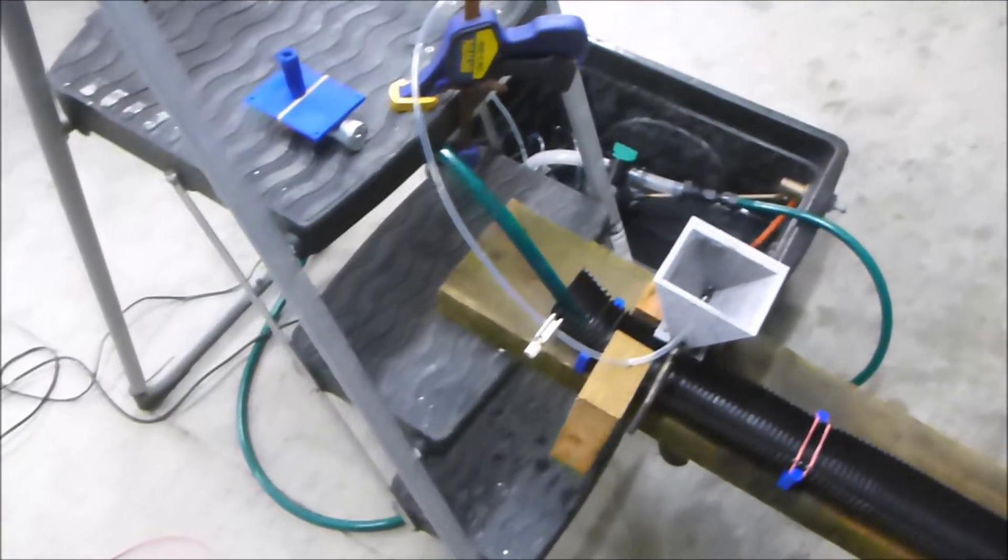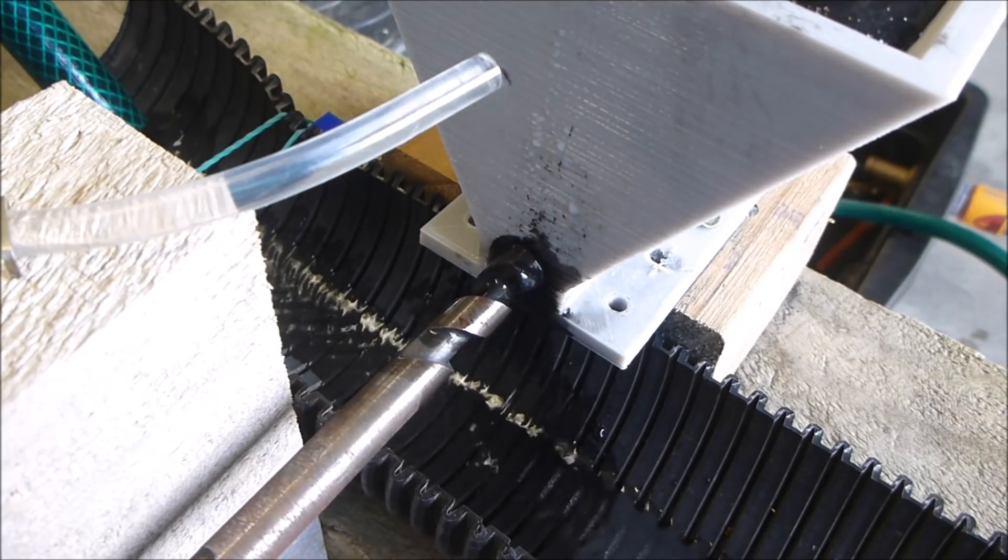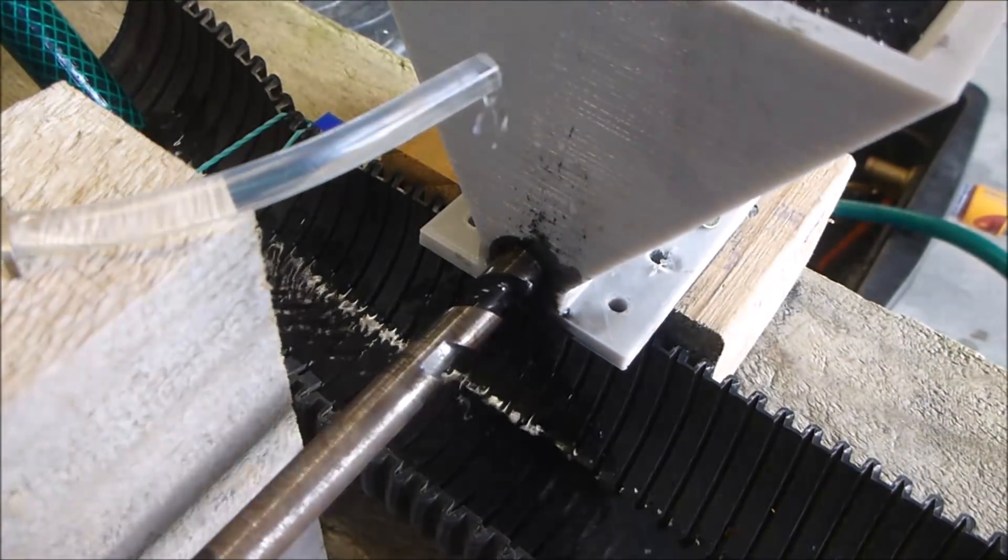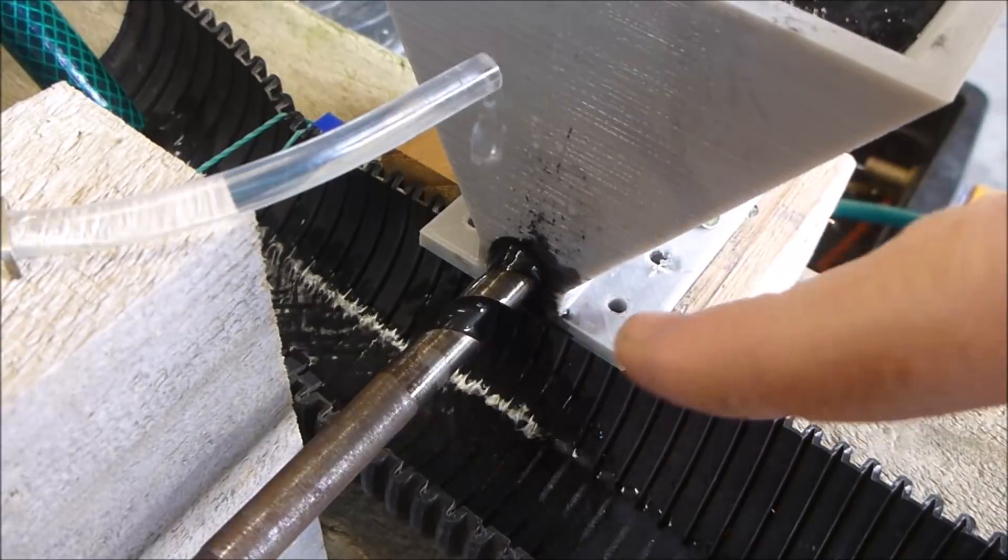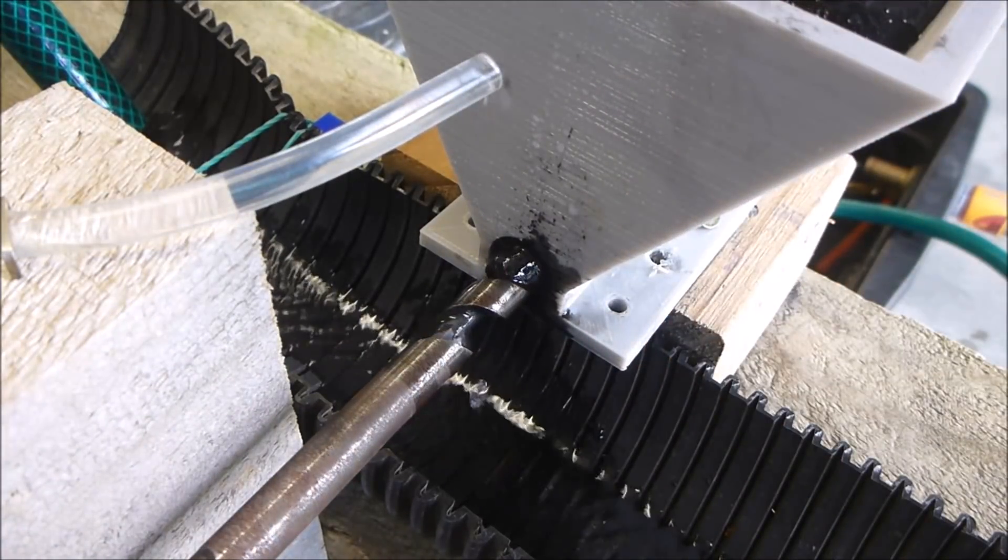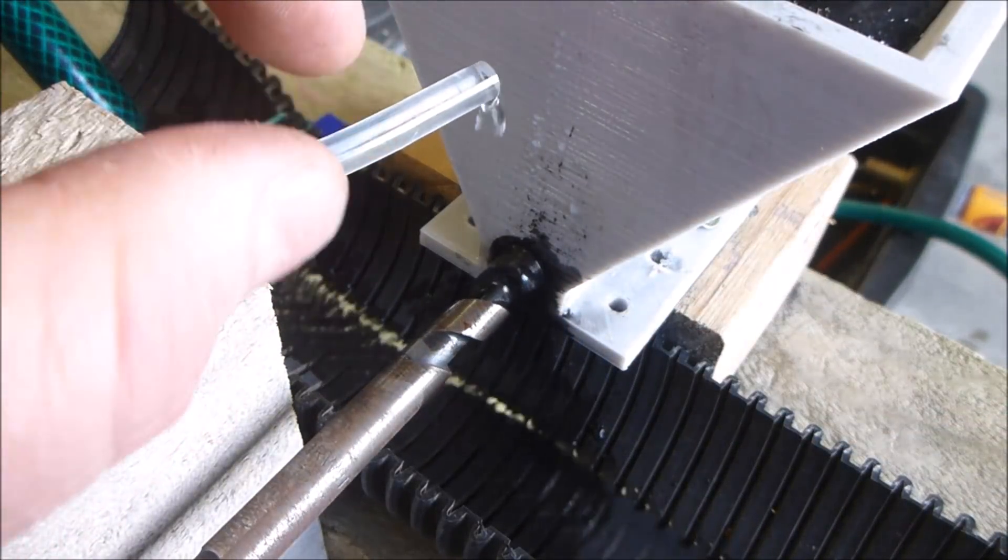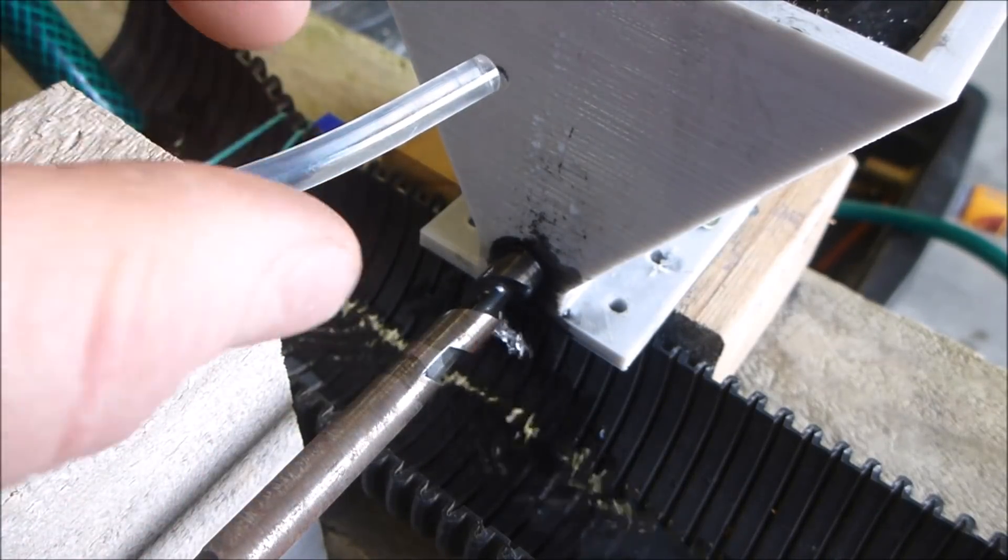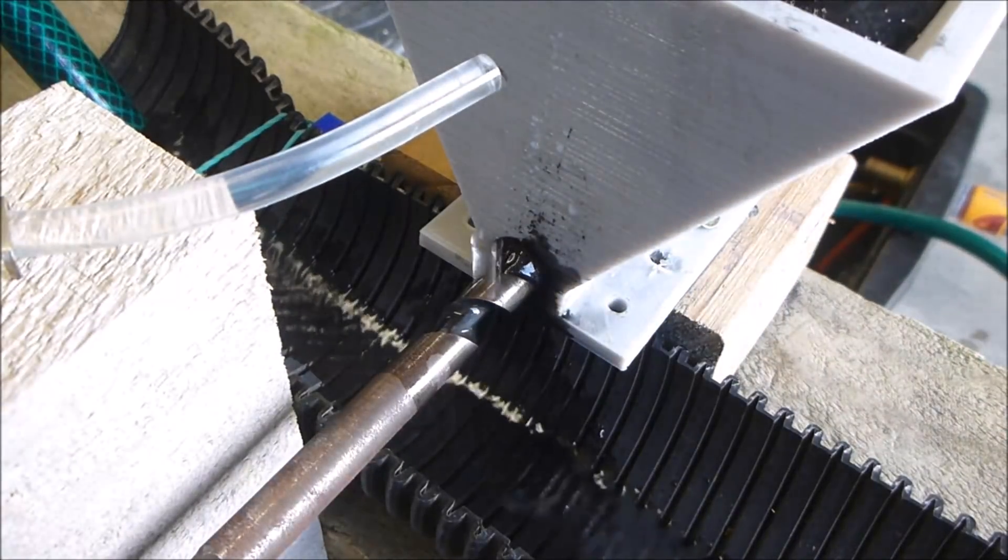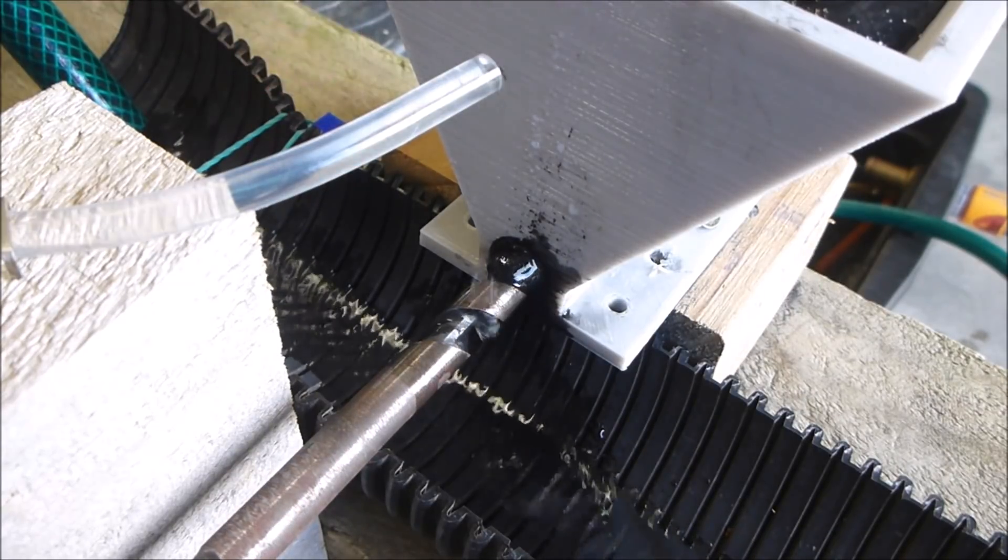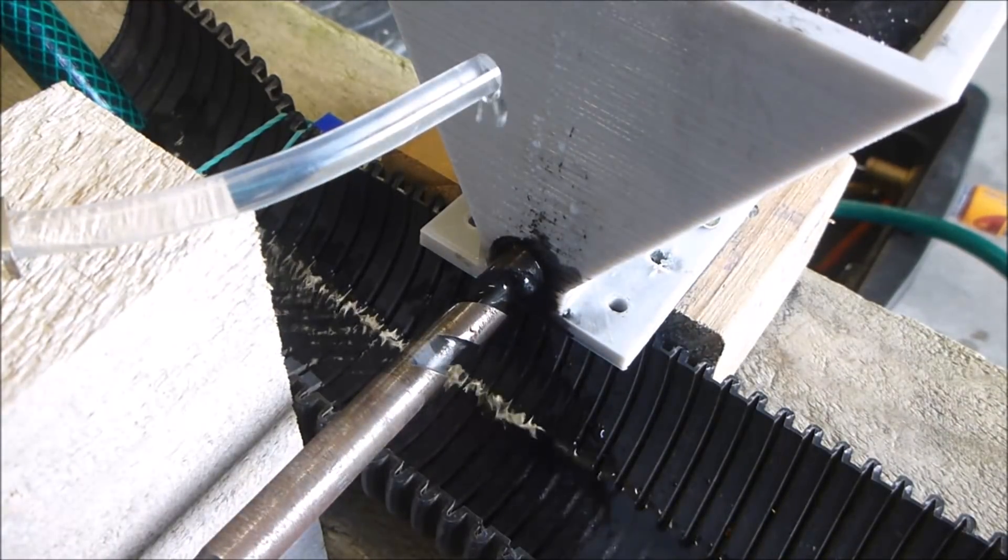Here we have the automatic gold sluice running. I've got the water set to quite a low flow rate. The auger is turning nicely and we're getting a nice consistent feed of material out of the hopper. I've got the little dripper making sure material gets washed off the auger, otherwise it tends to spiral out and fall off in big clumps.